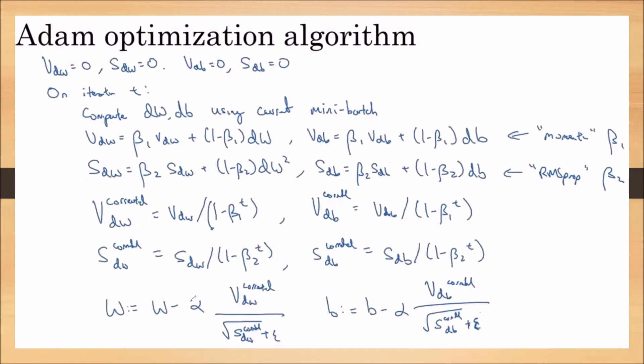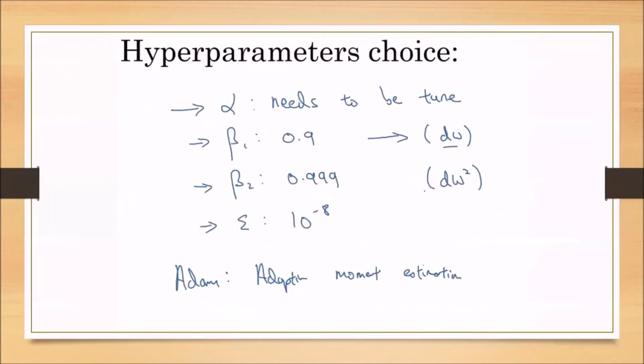Finally, when we're substituting the W and B values, you can observe W equals W minus alpha times VDW divided by square root of SDW plus epsilon. This term is because of gradient descent with momentum, and the denominator is due to RMS propagation. Similarly, B equals B minus alpha times VDB divided by square root of SDB plus epsilon. So we're combining gradient descent with momentum and RMS propagation.